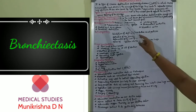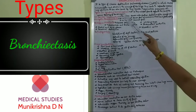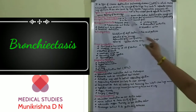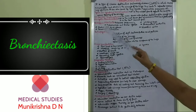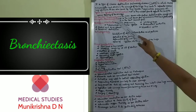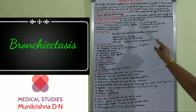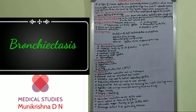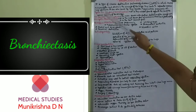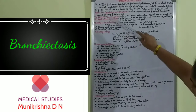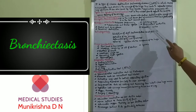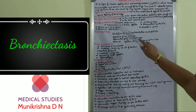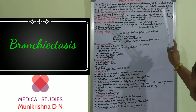Now we will see the types. First is cylindrical bronchiectasis, which is the mildest form and reflects the loss of normal tapering of the airways. Second is saccular bronchiectasis, which is more severe with further distortion of the airway wall. Third is cystic bronchiectasis, which is the most severe form and fortunately the least common form.